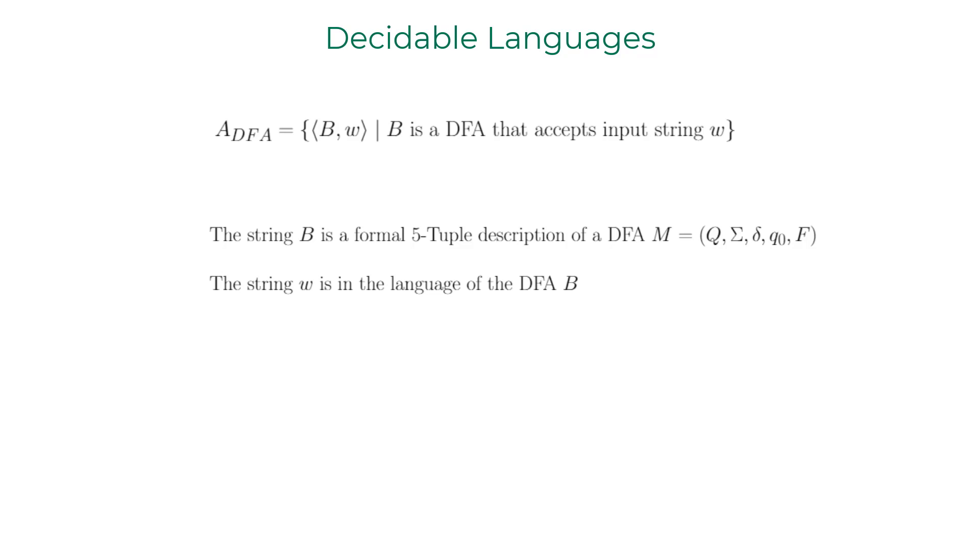If you were able to construct and simulate a DFA by looking at a five tuple using a pencil, paper, and an eraser, you can assume that a Turing machine can also construct and simulate it given appropriate control instructions.